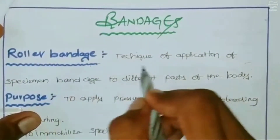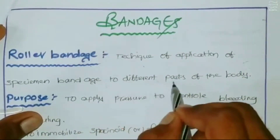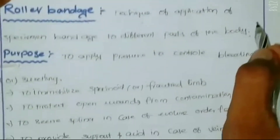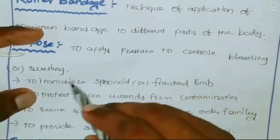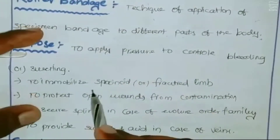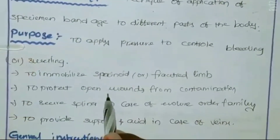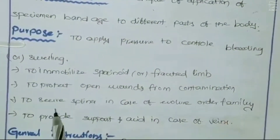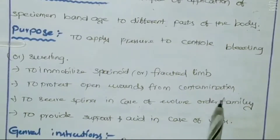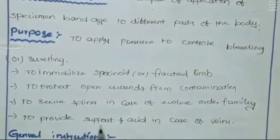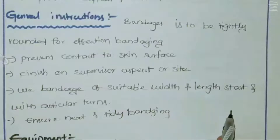First, I explain the roller bandage technique — application of bandage on different parts of the body. The purposes are: to apply pressure to control bleeding or swelling; to immobilize a fractured limb; to protect an open wound from contamination; to secure splints in case of fractures; and to provide support in case of veins.